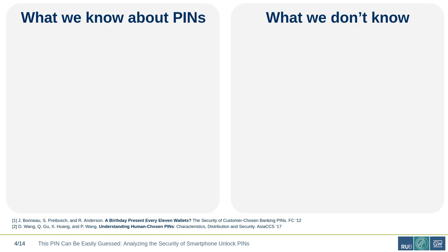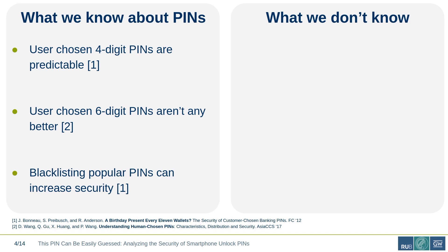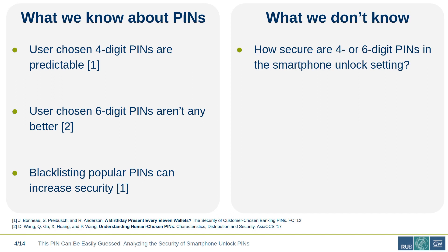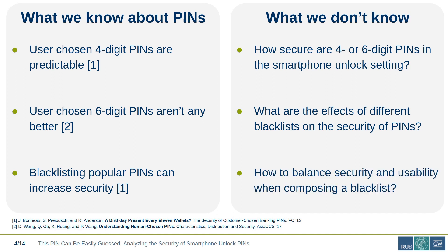What do we know and what don't we know about PINs? We know users choose predictable four-digit PINs — one of the two predominant PIN lengths. Wang et al. showed that user-chosen six-digit PINs are also predictable. The good news from Bono et al. is that blacklisting popular PINs can increase overall security. What we don't know: there's no direct comparison of four and six-digit PINs in the smartphone unlock setting, no data on actual effects of different blacklists, and no guidance on how to balance security and usability when composing a blacklist.